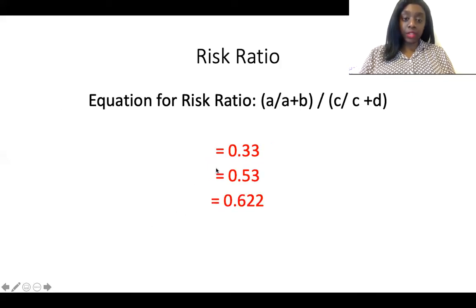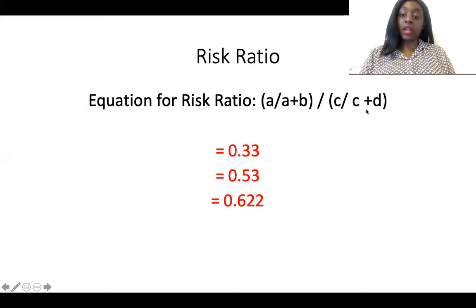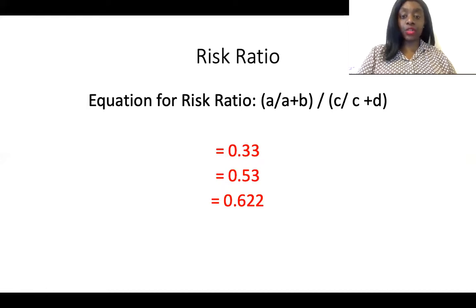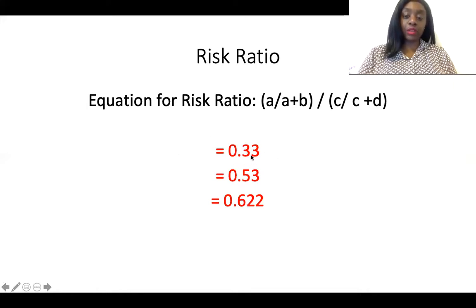The next question is risk ratio. The equation for risk ratio is the relative risk of the exposed group divided by the relative risk of the unexposed group. The exposed group is individuals who consume alcohol and the unexposed is individuals who do not. So 0.33 divided by 0.53 gives a total risk ratio of 0.622.